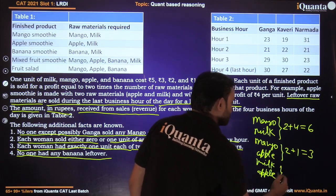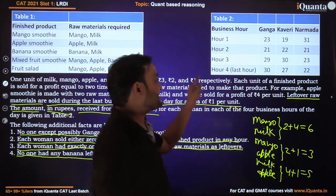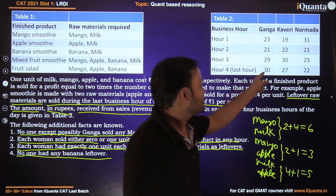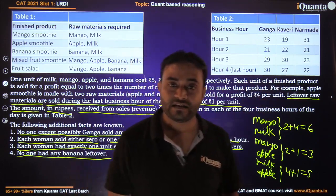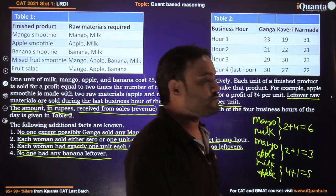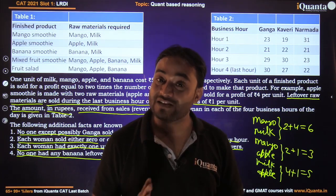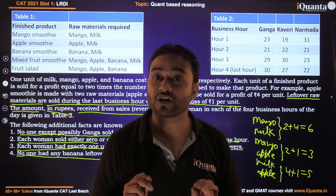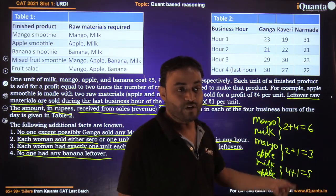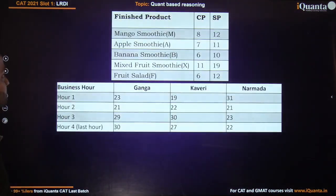Since the last hour revenues are 30, 27, and 22, which are greater than six, three, or five rupees from leftovers alone, we can conclude that in the last hour each woman sold leftover raw materials as well as some finished products.